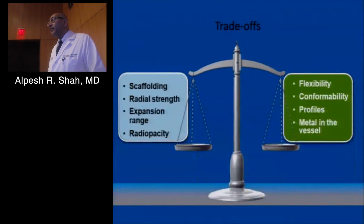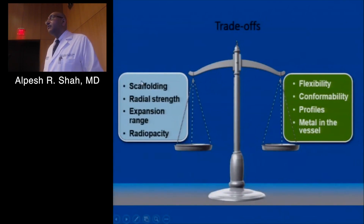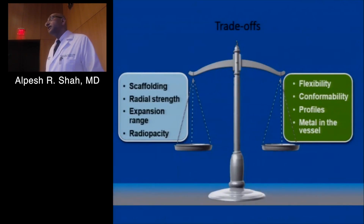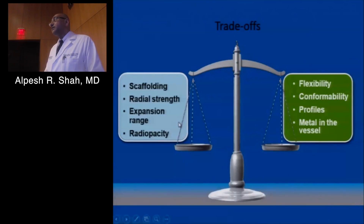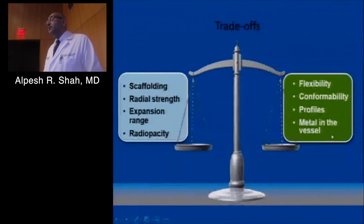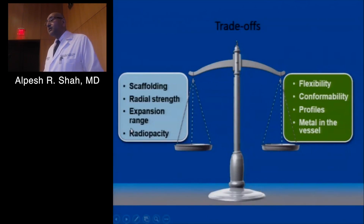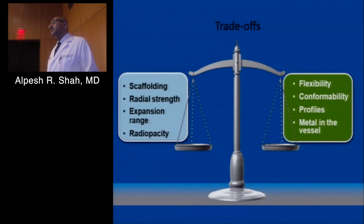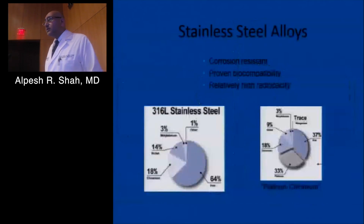There are trade-offs in every design decision. If you want more scaffold — which gives more radial strength — you lose flexibility and conformality. Something very rigid may not conform to the vessel shape. A larger expansion range increases the stent profile, making it harder to deliver. More radiopacity requires more metal. You have to design a stent that finds the middle ground across all these considerations.